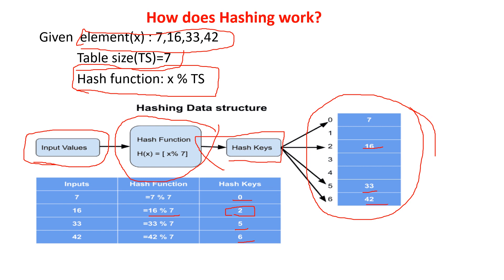So here I have explained that 42 is going to be stored at the 6th index. Using the hash function I calculated the index and stored all these elements in the hash table.